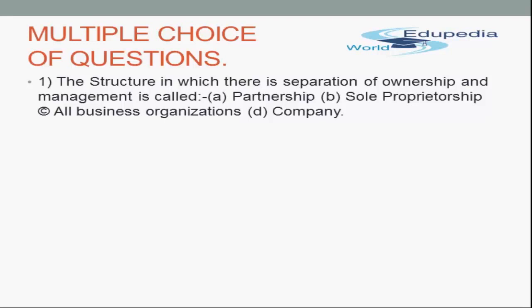In this question, you have two key words: ownership and management, and their separation. Can it be sole proprietorship? No. Can it be partnership? No, because in partnership the partners themselves are responsible and manage the business. In sole proprietorship, the owner has all the powers — there is no separation of ownership and management. So the answer is company. You have to mark the tick against company.